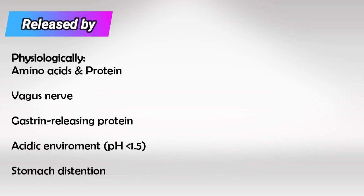Gastrin can be released physiologically by ingestion of food, which will cause stomach distension and stimulation of the vagus nerve. This will result in increasing the acidity of the stomach, which will also stimulate gastrin release.